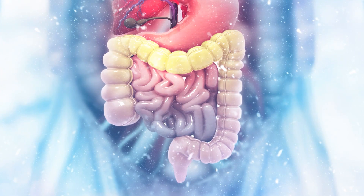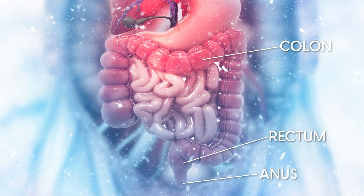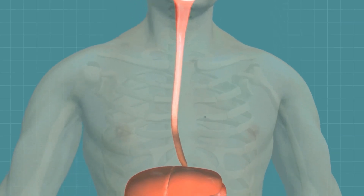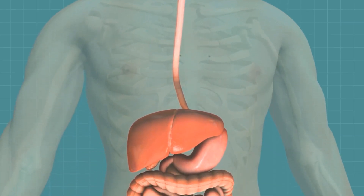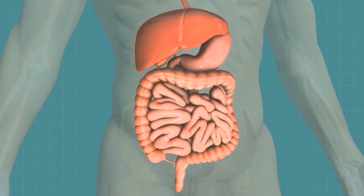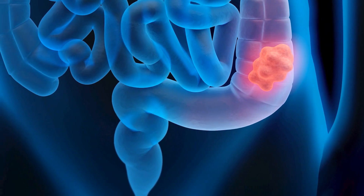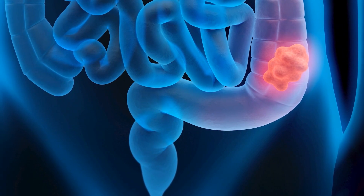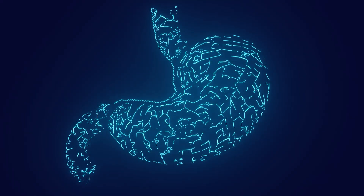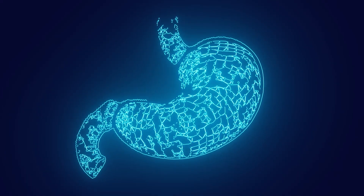The large intestine includes the colon, rectum, and anus. It's a long tube that continues from the small intestine as food reaches the end of its journey. Through your digestive system, the large intestine turns food waste into stool and passes it from the body. Along with the stomach, they are both part of what we commonly refer to as the gut.